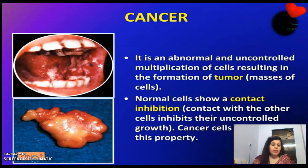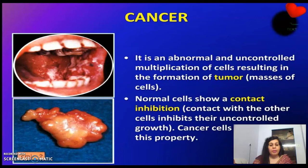Normally, cells show one property called contact inhibition. When cells come in contact with each other, uncontrolled growth is not possible. But when cells lose this property, we call them cancer cells.